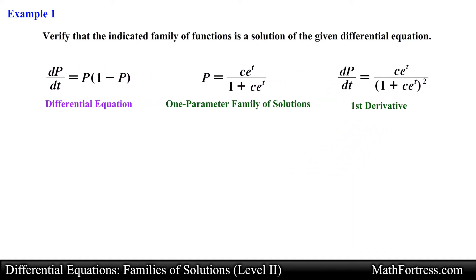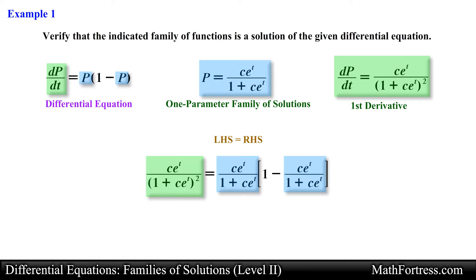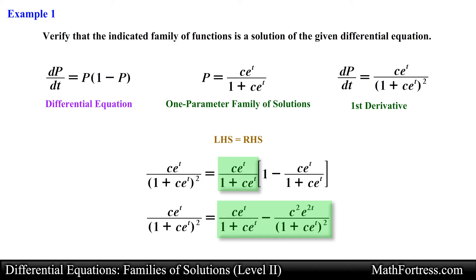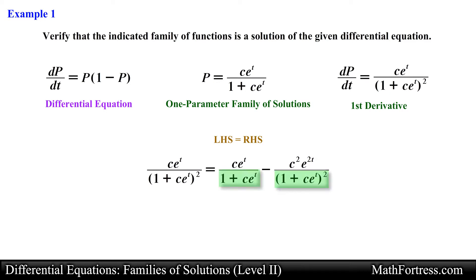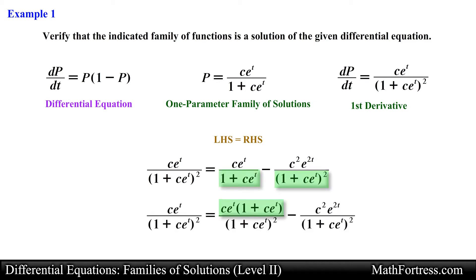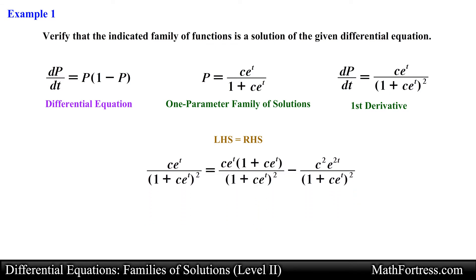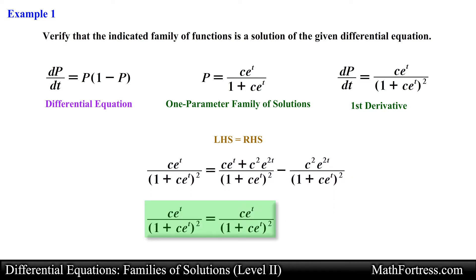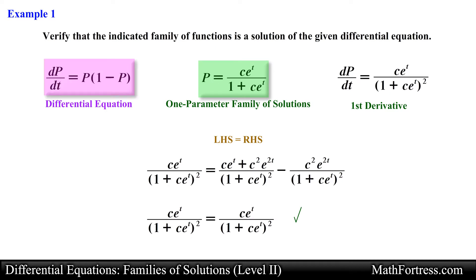Having found the derivative, it's just a matter of substituting this expression into the differential equation, making sure that the left and right hand side match. Substituting the derivative along with the solution we obtain the following expression. Distributing the expression on the right hand side we obtain the following. Next we need to find a common denominator and modify the numerators accordingly. Then it's just a matter of simplifying the numerator and collecting like terms. In the end we see that both sides are equal to each other, meaning that this one-parameter family of solutions is indeed a solution to the differential equation.